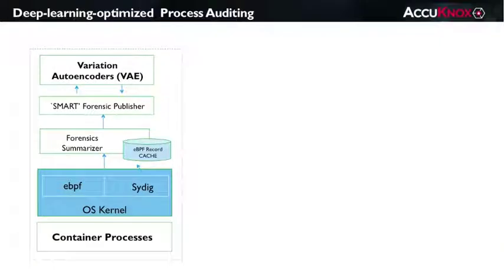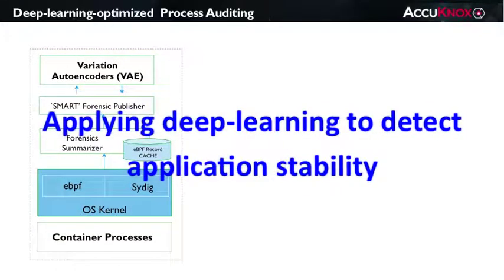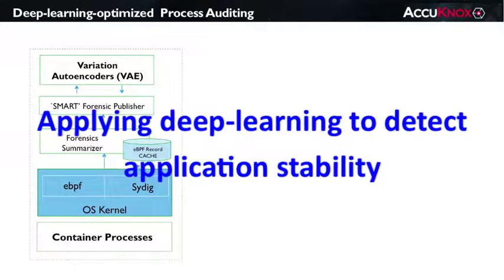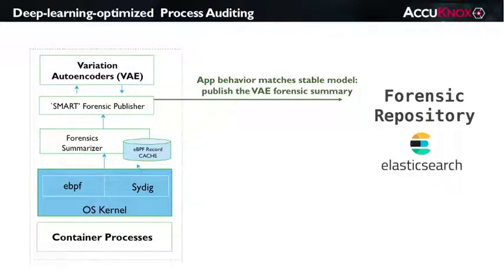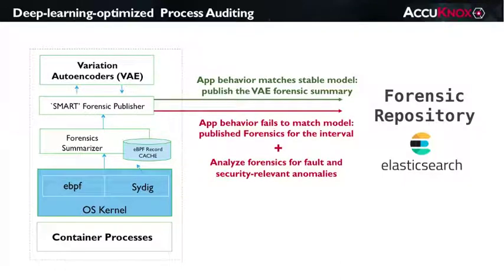Our team's approaching this problem using a deep learning algorithm called a variational autoencoder, or a VAE. The concept is to train two neural networks to recognize when a process is behaving normally via its system call patterns. Then during these normal interval patterns, we can optimize the forensic stream publisher to essentially publish just an abstraction of this behavior pattern. With the VAE, we can build a smarter forensic publisher, one that detects intervals when we can simply characterize and report the observed normal runtime patterns from periods when the app isn't following any learned pattern.